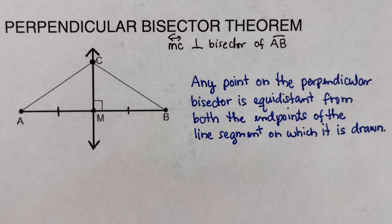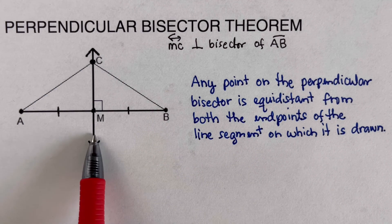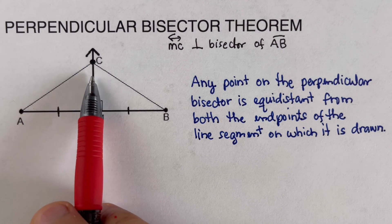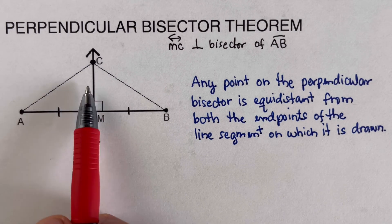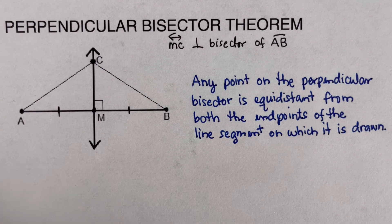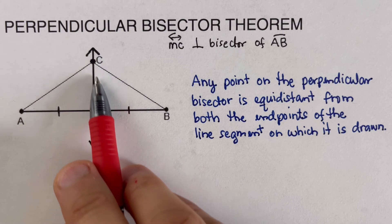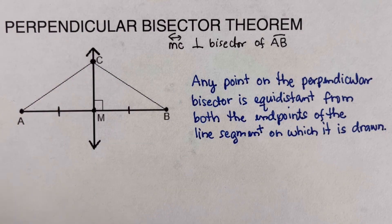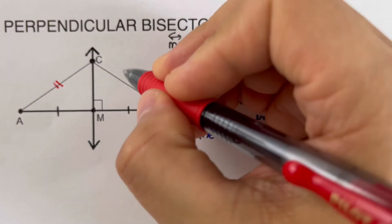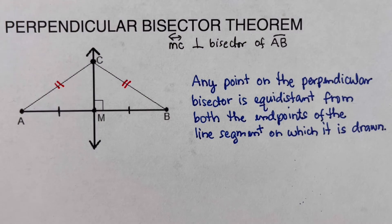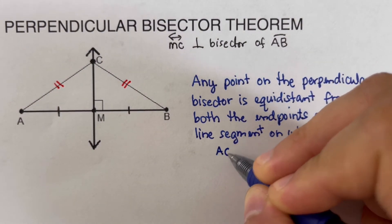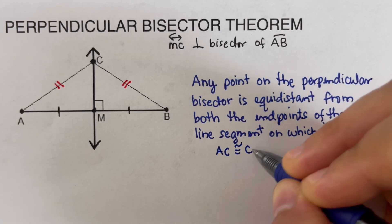What does this mean? If we put dots on line CM, the distance from any dot to point A and to point B would be equal. Since point C is on the Perpendicular Bisector, we can say that AC is congruent to CB.